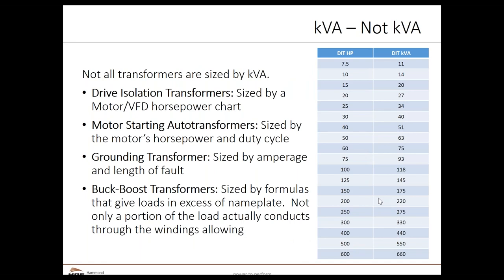There are cases where kVA alone is not how we size the device. Drive isolation transformers are sized by motor horsepower — as we say, don't be smart, use the chart. The kVA of a drive isolation transformer is derated to handle the proper load. For example, 100 horsepower is roughly 75 kVA, yet we suggest a 118 kVA drive isolation transformer, because of additional heating from harmonics. Motor starting auto transformers are sized by the motor's horsepower and duty cycle — how many starts per hour.